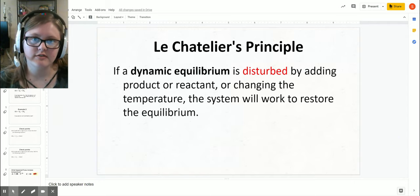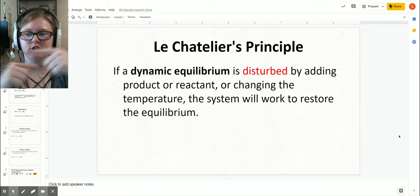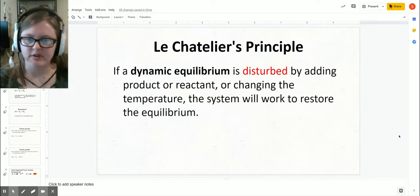The definition of Le Chatelier's principle says if a dynamic equilibrium—equilibrium is shown by a reaction that has arrows going both ways—dynamic means that it can shift, it's constantly moving, it can go forward or backward. Equilibrium is when the two reactions, forward and reverse, are happening at the same speed.